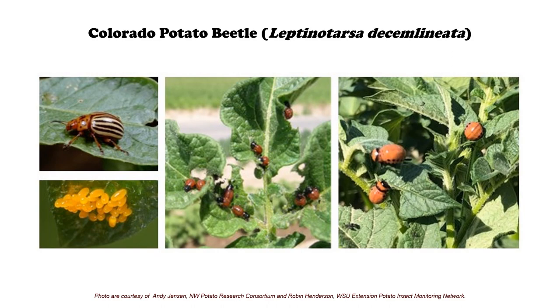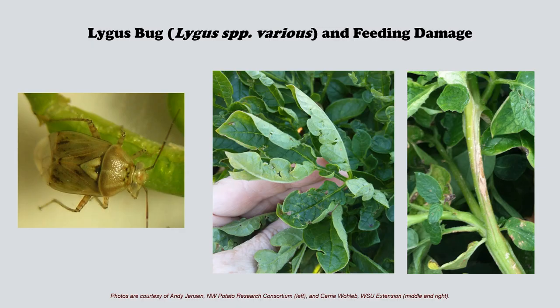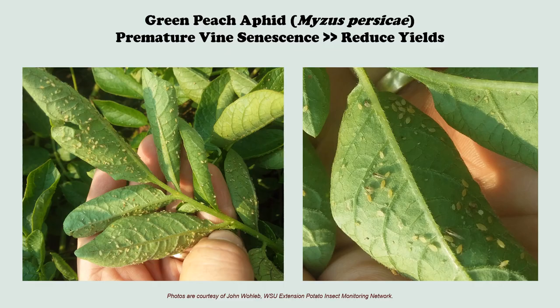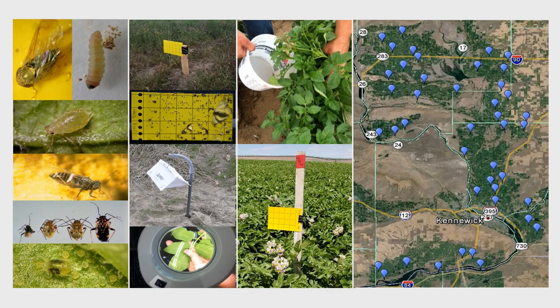Other damaging insects include Colorado potato beetles, Lygus bugs, and even aphids if their populations get out of control. To help potato growers manage all of these insects, I developed a comprehensive insect monitoring network for potatoes in the Columbia Basin. My team monitors insects in commercial potato fields using trapping or sampling methods that have been established for each of our targeted pests — all of those I just mentioned and a few more.